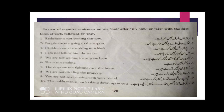Here is a page from your book. First of all, in the case of negative sentences, we use not after is/am/are, with the first form of the verb followed by -ing. Here are examples from the book: 'I am not going to the airport.' 'Children are not making mischief.' 'I am not telling him the secret.'